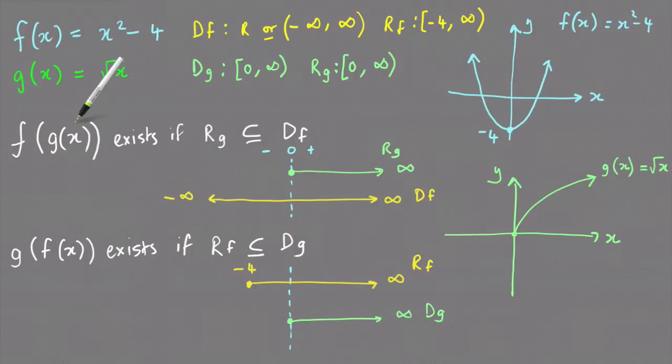And that's why the range of the g function are the values that you need to look at to see whether f of g of x exists.